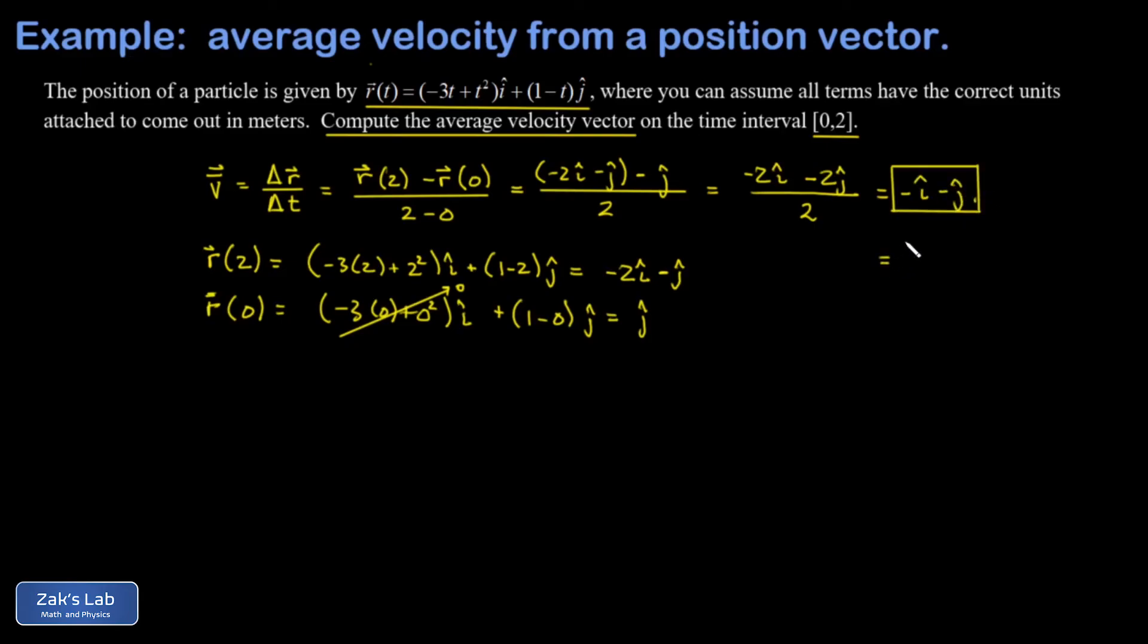And it might be nice to put units on this. What this means is that on average for this time interval, the particle was moving at negative 1 meter per second in the i hat direction, in other words, 1 meter per second on average to the left. And then negative 1 meter per second j hat, in other words, 1 meter per second in the downward direction.